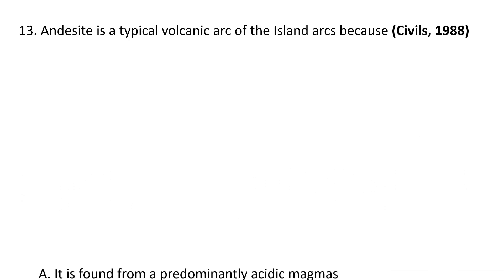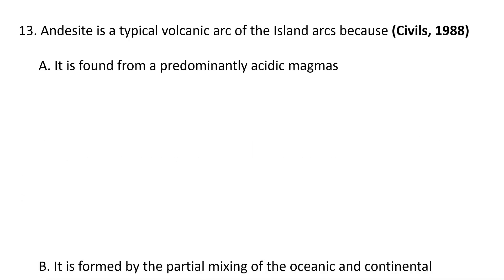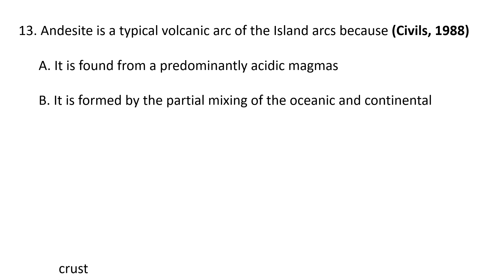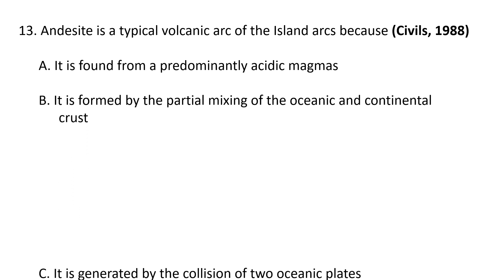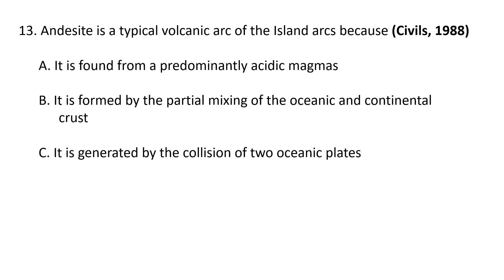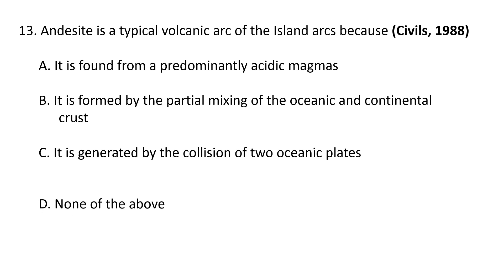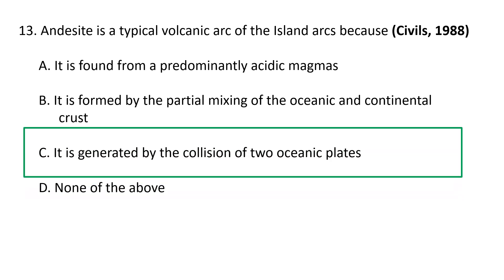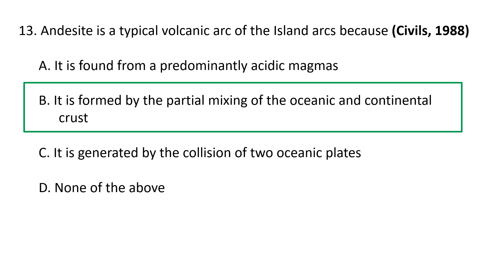Next question: Andesite is a typical volcanic rock of island arcs because — A) it is formed from predominantly acidic magmas, B) it is formed by the partial mixing of oceanic and continental crust, C) it is generated by the collision of two oceanic plates, D) none of the above. The correct answer is B — it is formed by the partial mixing of oceanic and continental crust.